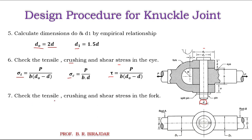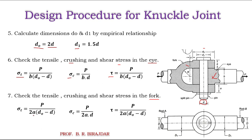We then check the same three stresses — tensile, crushing, and shear — in the fork end. The previous check was for the eye end; now we verify for the fork end. Using the dimensions a, d, D0, we calculate sigma t, sigma c, and tau again. All values must be less than the allowable stress.